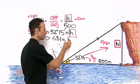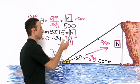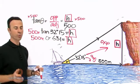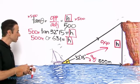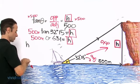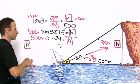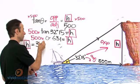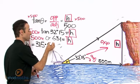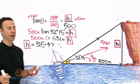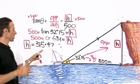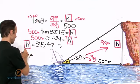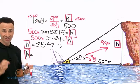That's our height of the cliff. Let's put it in the calculator: 500 times 0.631 yields h equals 315.47. We can round it off—the 4 is lower, so the final answer is h equals 315 meters. This is the height of the cliff to the nearest meter.